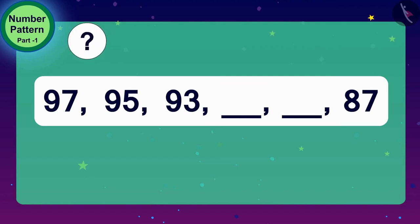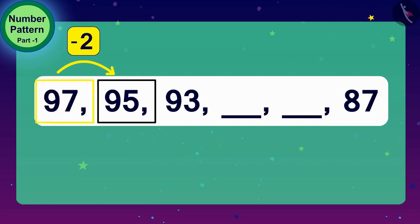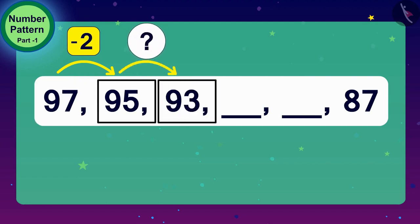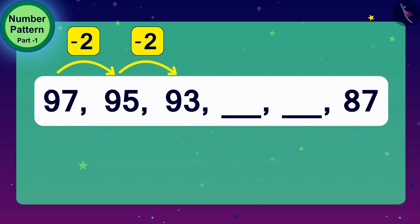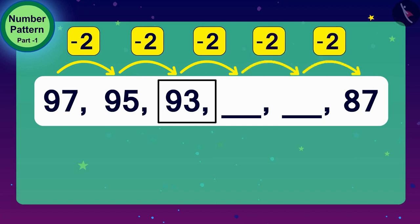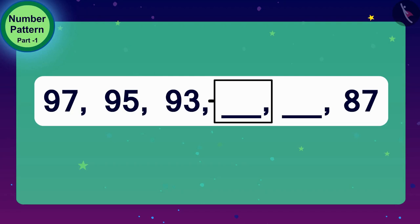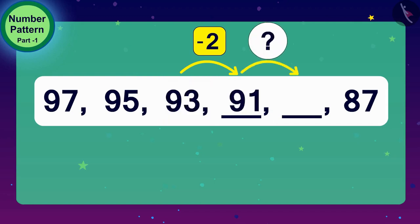What do we have to do to get 95 from 97? Yes, we have to subtract 2 from 97. And what do we have to do to get 93 from 95? Exactly — once again, subtract 2. So, to get the next number in this number pattern, we need to subtract 2 from the number before it. The next number will be 2 less than 93, and after that, 2 less than 91.